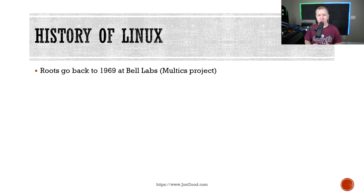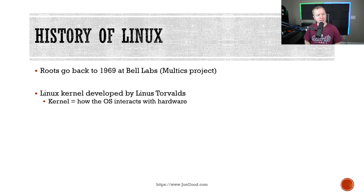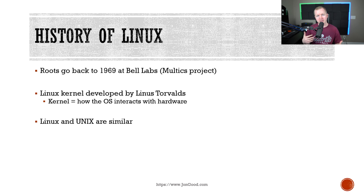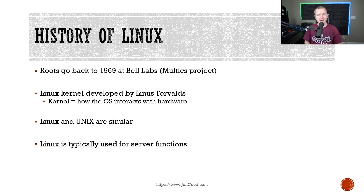The roots of Linux go back to 1969 at Bell Labs with something called the Multics Project — a Unix project focused on developing the Unix operating system. The Linux kernel was developed by Linus Torvalds much later, and the kernel is basically how the operating system interacts with the hardware. Linux and Unix are very similar; some commands differ but the overall infrastructure is the same. Computers like Apple are also based on Unix.